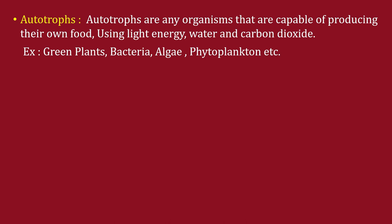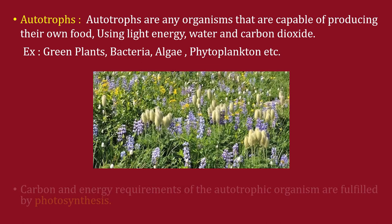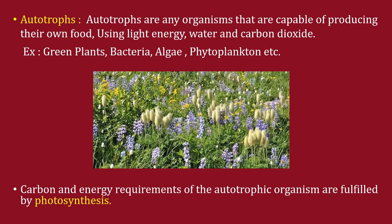Autotrophs are organisms capable of producing their own food using light energy, water, and carbon dioxide. Examples include green plants, bacteria, algae, and phytoplanktons. The carbon and energy requirements of autotrophic organisms are fulfilled by photosynthesis.